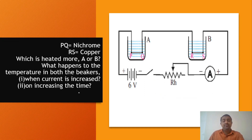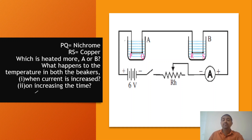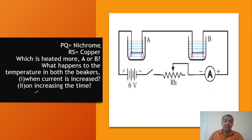Now we will discuss a question from the textbook. There are two beakers A and B. In beaker B, we have a Nichrome wire and a copper wire. There is a current of two units flowing. The conductors — Nichrome and copper — both carry current, and that is why there is a heating effect due to resistance in each conductor.